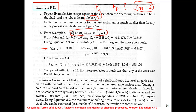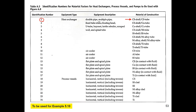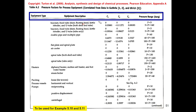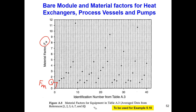The base price is $25,000, the same as before. We need to go to the table and find C1, C2, C3 for our new pressure. For a floating head heat exchanger at 100 bar, the pressure falls in the range of 5 to 140, so we use those C1, C2, C3 values to find the new pressure factor Fp.